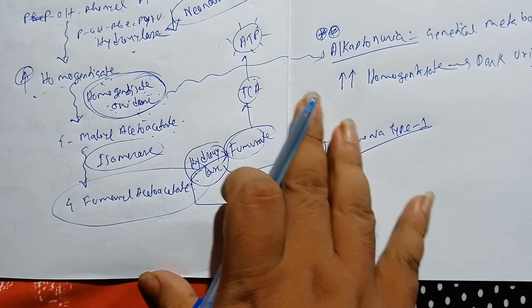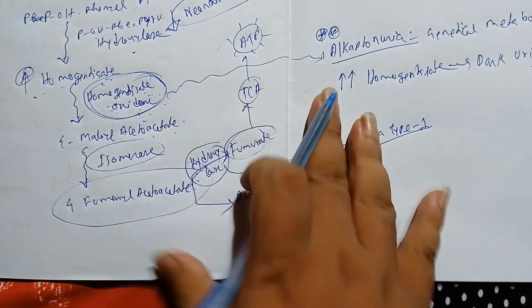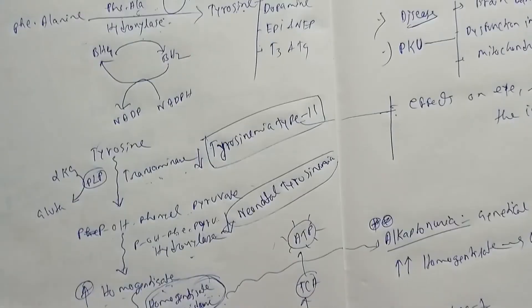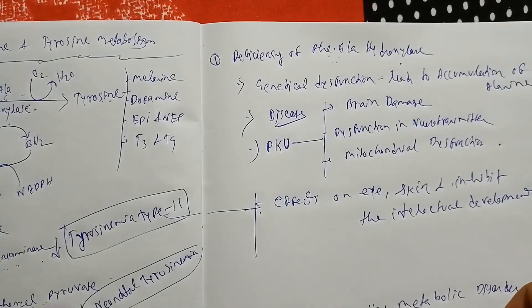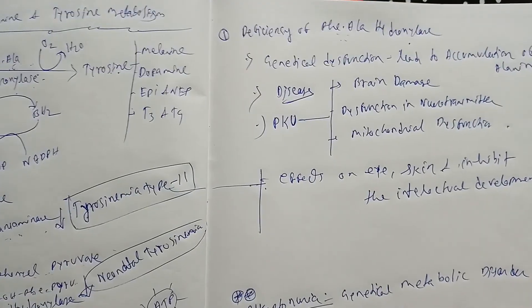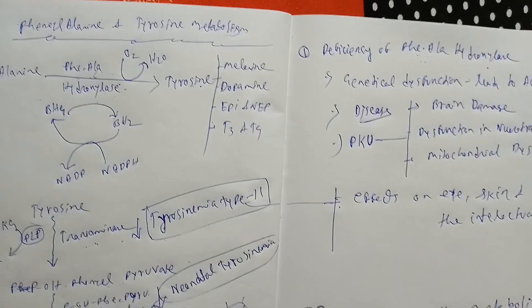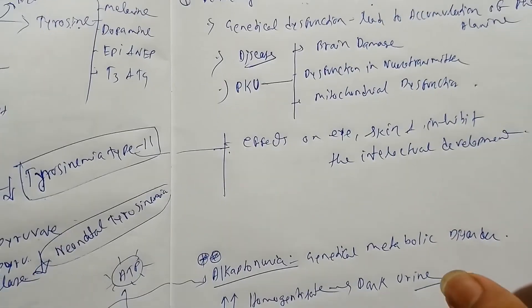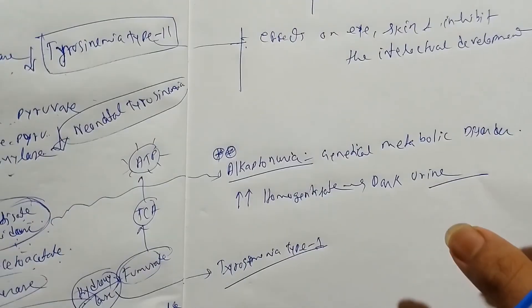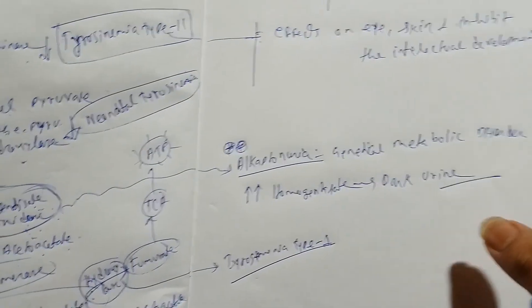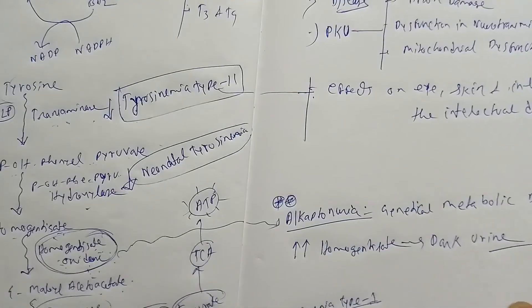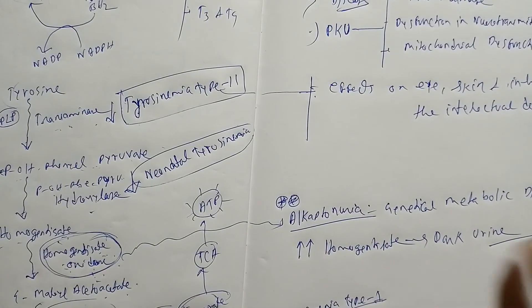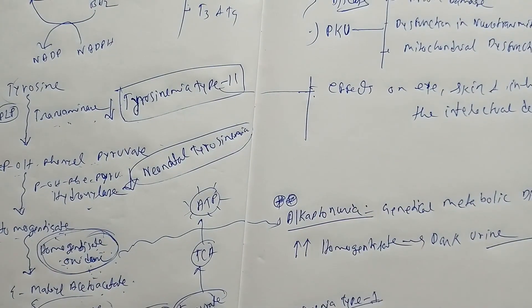Now I've talked about the disorders of the enzyme pathway. The most important one to remember is alkaptonuria — what is happening and the disruption of the enzyme. I hope you understood. Let me know in the comment section.